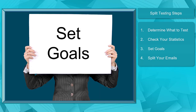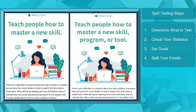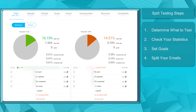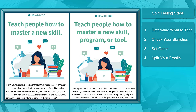Next, set goals. Determine the result that you want to get from your split test. That way, you will know what outcome you can try to improve on to increase your subscribers' engagement on your emails. And finally, split test your emails. Start the testing and compare the results with your goals. Once you have the results, you'll determine which email you can use in your campaigns that has the most engagement.